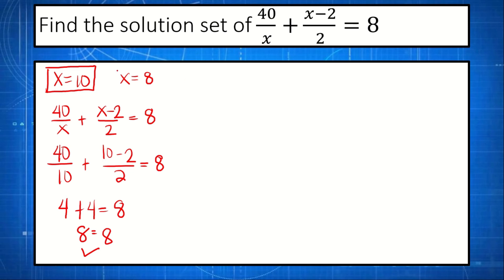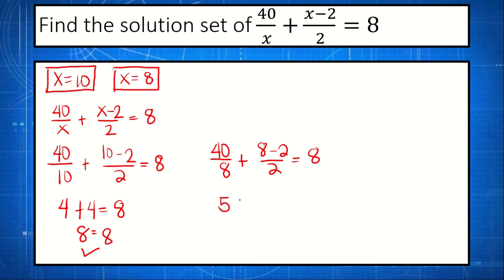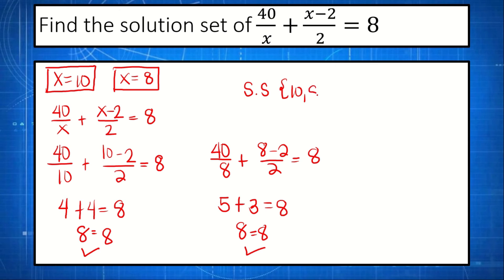Now we check x equals 8: 40 over 8 plus 8 minus 2 over 2 equals 8. So 40 divided by 8 is 5, plus 8 minus 2 — which is 6 — divided by 2 gives 3, equals 8. So 5 plus 3 equals 8, which is true. We also consider 8 as a solution because it makes our original equation true. Therefore the solution set is {10, 8}.